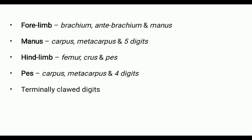The hind limb also has three divisions: femur, crus, and pes — also known as thigh, shank, and foot respectively. The pes consists of three parts: tarsus, metatarsus, and four digits — also known as ankle, sole, and toes respectively.